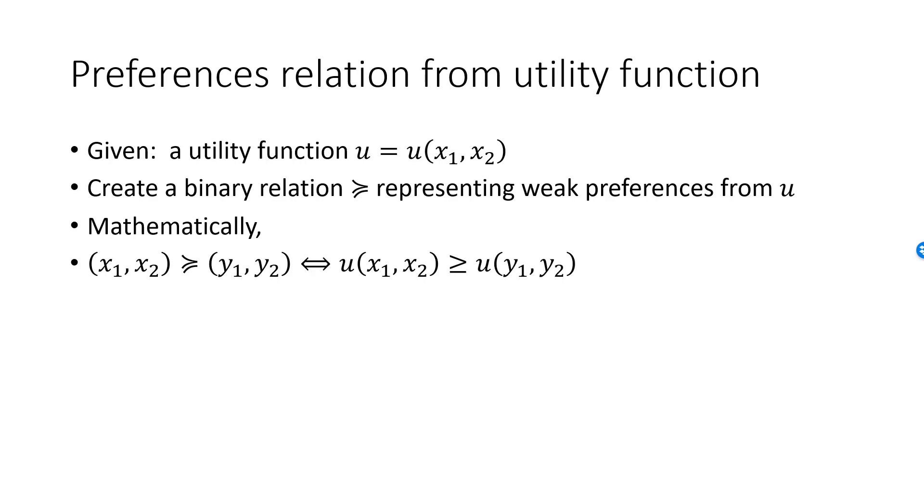We will say that the X bundle is weakly preferred to the Y bundle if and only if the utility we get from the X bundle is greater than or equal to the utility experience from the Y bundle. With the utility function, instead of comparing bundles, we can now simply compare numbers. It's not hard to see that if we create a binary relation like this from a utility function, it will automatically be a total order.